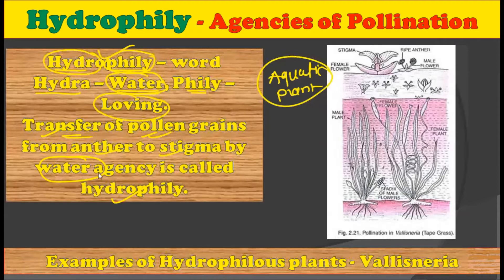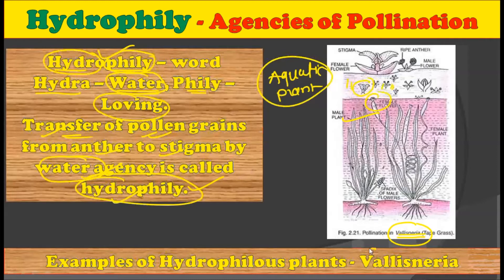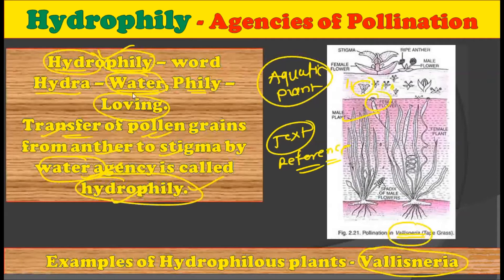The transfer of pollen grains from anther to stigma by using water as agency is called hydrophily. You can observe in this picture — this is a Valisneria plant which is submerged in the water, showing male flowers and female flowers which are pollinated by using water. While the plants which show hydrophily are called hydrophilous plants. You should remember a famous example of hydrophily is Valisneria, because it is given in every textbook and reference book. You should mention this example while writing your answer in the main examination.